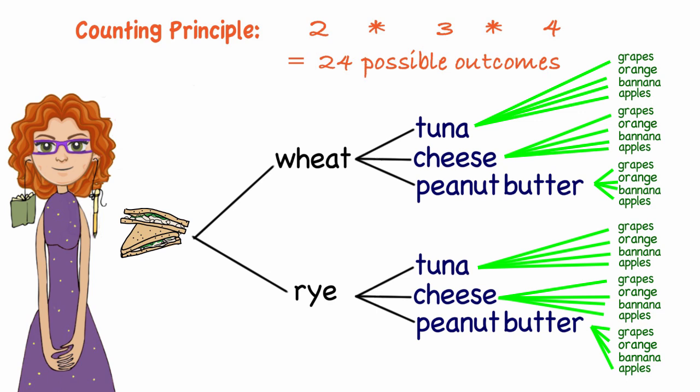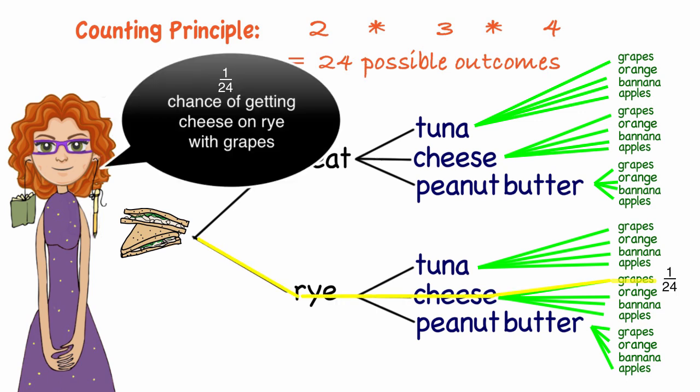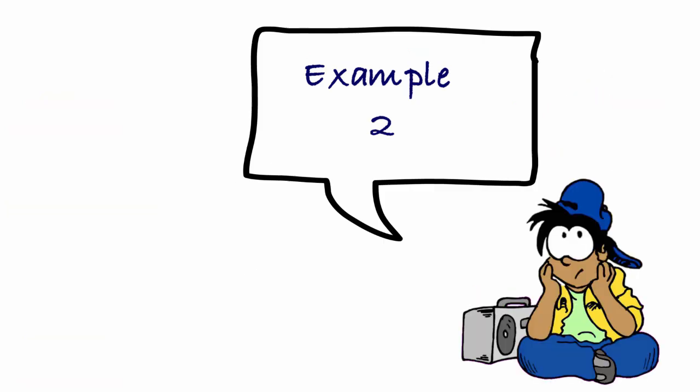And when we start looking at it in terms of probability, I say, well, what is the chance I'll pick any one of those by random? Well, that would be 1 in 24. Let's look at another example.